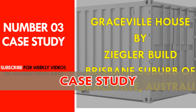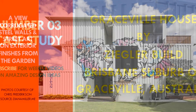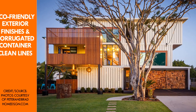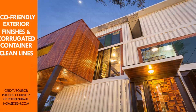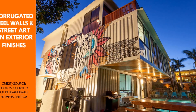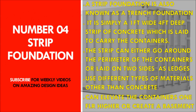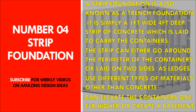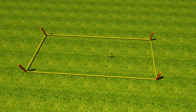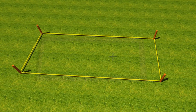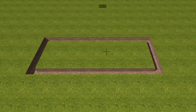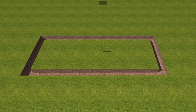A well-known case study for the pile foundation is the Graceville Container House in Australia. The fourth foundation type is called a strip foundation, also known as a trench foundation. It is simply a one-foot-wide, four-foot-deep strip of concrete laid to carry your shipping containers — done similarly to a traditional strip foundation for concrete, brick, or stone wall houses.